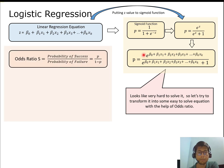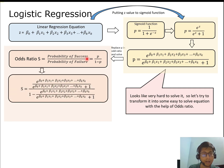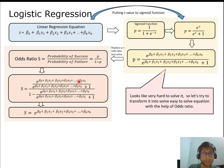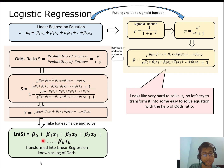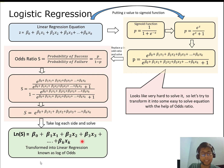To transform it into an easier form, the odds ratio comes into picture. The odds ratio S is the probability of success divided by probability of failure: S = p / (1 − p). Substituting the value of p and simplifying, we get S = e^z, which is nothing but e raised to the linear regression equation. Taking the log of both sides gives: log(S) = β₀ + β₁x₁ + β₂x₂ + … + βₖxₖ. The right-hand side is the linear regression equation, and the left-hand side is the log of odds. So logistic regression is a transformed linear equation in terms of log of odds.